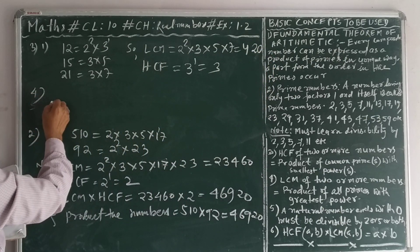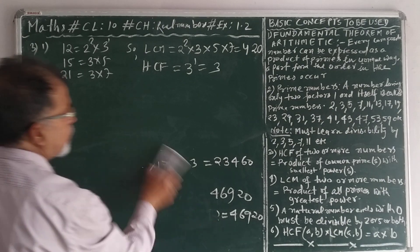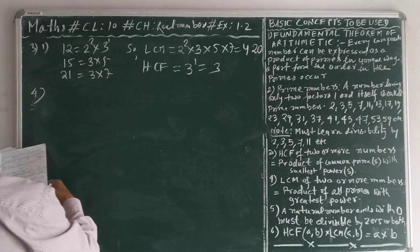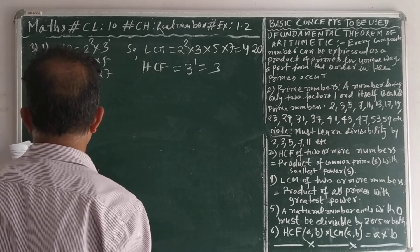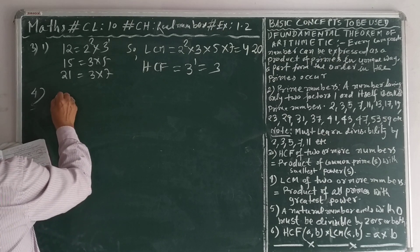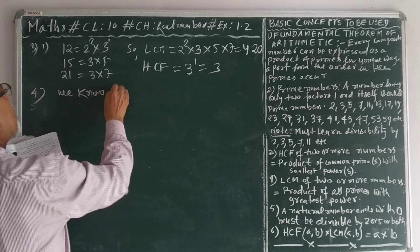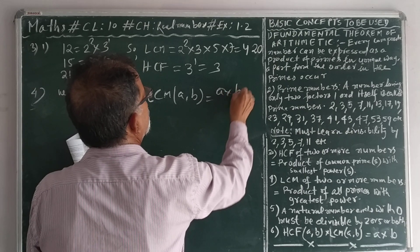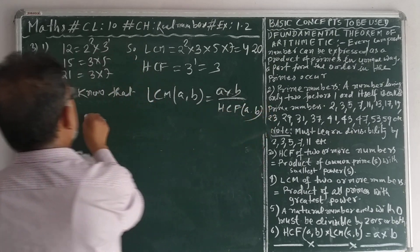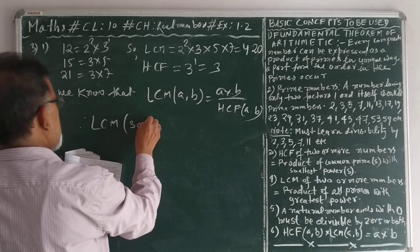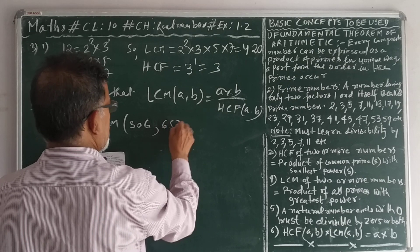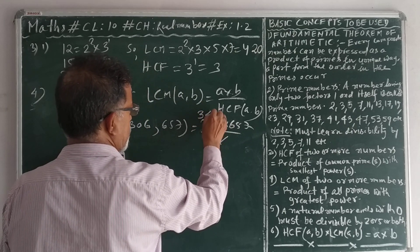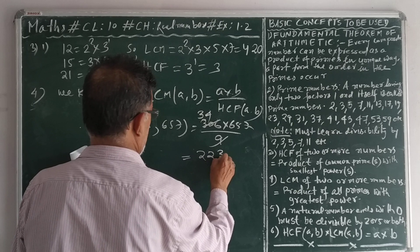Question number 4: You already know that the product of LCM and HCF equals the product of the two numbers — this is only true for two numbers, not more than two numbers. We know that LCM of two numbers A and B equals A into B divided by HCF. Therefore, LCM of 306 and 657 equals 306 into 657 divided by 9, which equals 22,338.